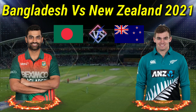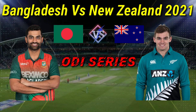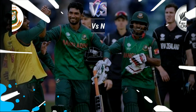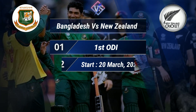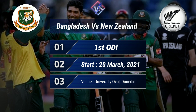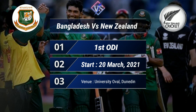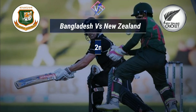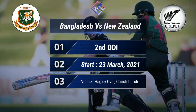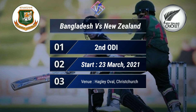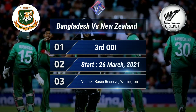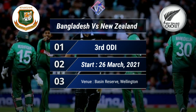Bangladesh vs New Zealand ODI Series 2021 details and both teams' final squads. Bangladesh vs New Zealand 1st ODI match: 20 March 2021 at University Oval, Dunedin. 2nd ODI match: 23rd March at Hagley Oval, Christchurch. 3rd ODI match: 26 March 2021 at Basin Reserve, Wellington.